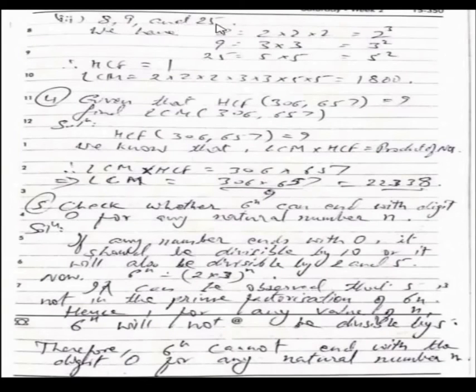Third set of numbers is 8, 9 and 25. We have 8 as 2 into 2 into 2, 9 is 3 into 3, 25 is 5 into 5. So HCF is 1 and LCM is 1800.